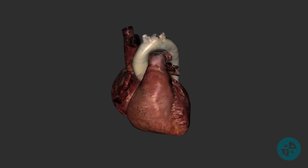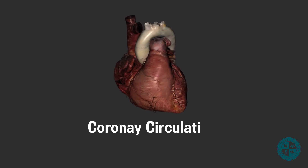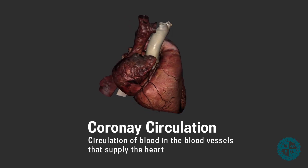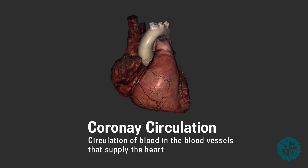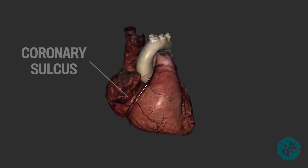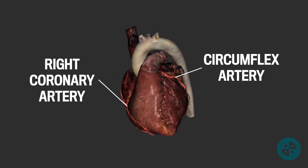On the anterior surface of the heart, we will be able to make out different sulci or grooves. In each of these sulci, we'll find branches of coronary circulation. The coronary circulation is responsible for supplying the heart tissue with the oxygen and nutrients it needs to continue to work efficiently, while also removing metabolic wastes. The first one we can see here is part of the coronary sulcus. This sulcus denotes the separation between the atria and the ventricles, and this is also where we will find arteries for the coronary circulation — specifically the right coronary artery on the right side and the circumflex artery branching towards the left.